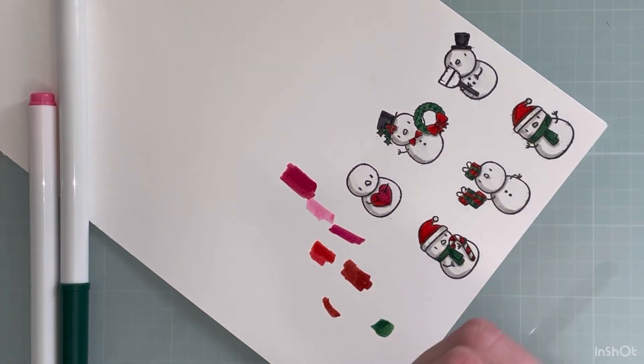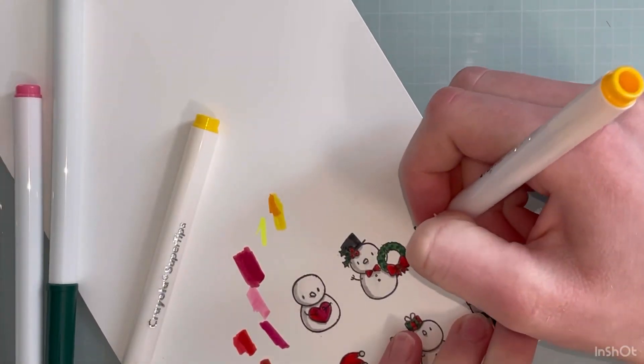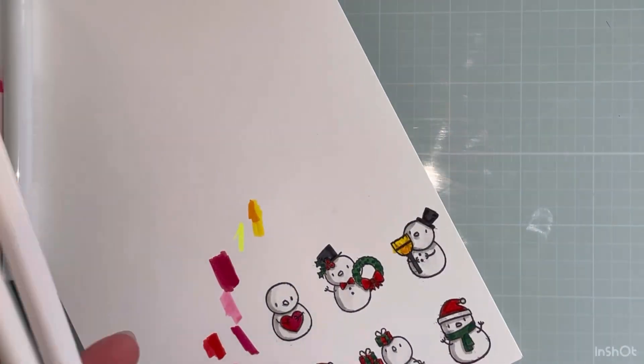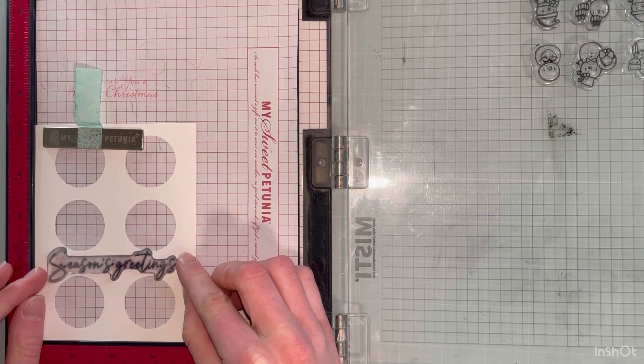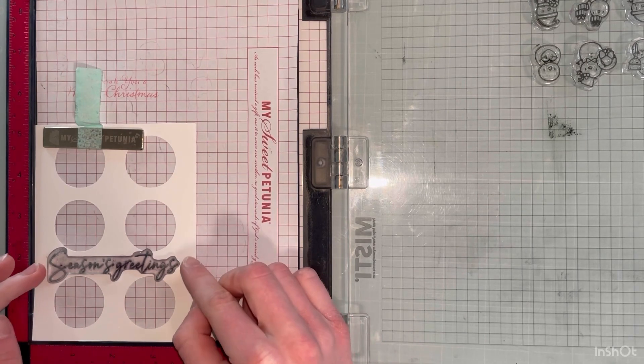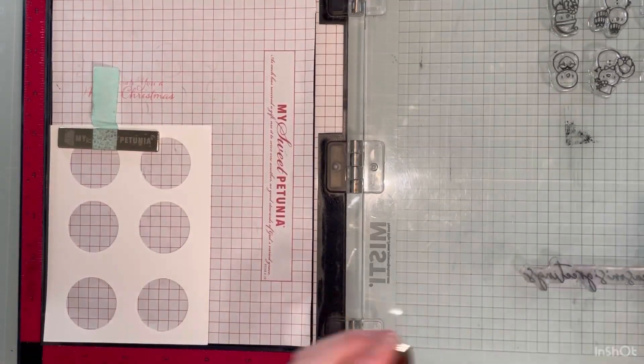I do like to typically bring in my red last because it can get blended into the other colors if you aren't being careful. If you go outside of the lines, that's okay. You can use a white gel pen to cover it up, which I did have to do.